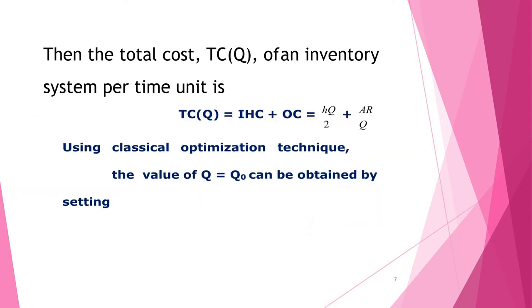So total cost TC(Q) of an inventory system per time unit is the sum of inventory holding cost and ordering cost. Inventory holding cost is HQ/2 and ordering cost is AR/Q. So total cost TC(Q) is HQ/2 + AR/Q.